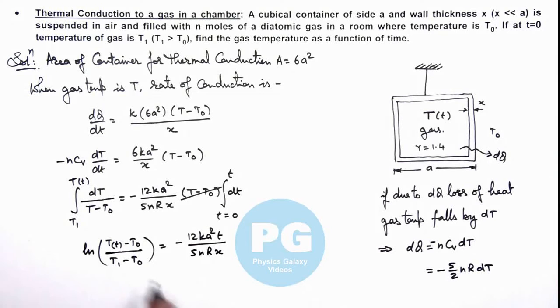On further rearranging the terms, this will give us the value of temperature as a function of time that is equal to T₀ plus (T₁ - T₀) multiplied by e^(-12ka²t/(5nRx)). This is the result of this problem.